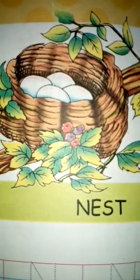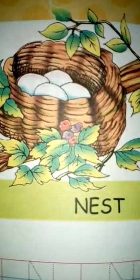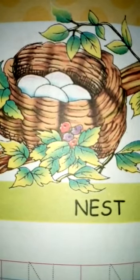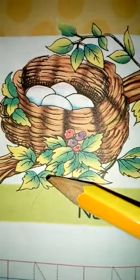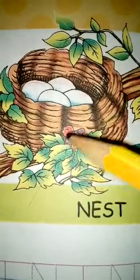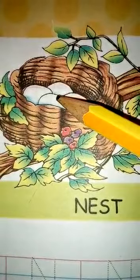See the picture. What is it? Nest. N for nest. And what do you see here in this picture? What are these? Yes, leaves. What is it? Leaves. What is here inside? Eggs.